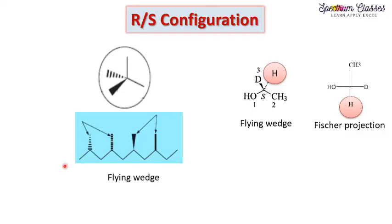Hello everyone, welcome to my channel Spectrum Classes. In continuation of our previous video on RS configuration, this is part 2. In this video we are going to discuss the RS configuration for compounds represented in the form of flying wedge structures. Here is the flying wedge structure — the solid wedge is represented here and these are the dashed wedges.